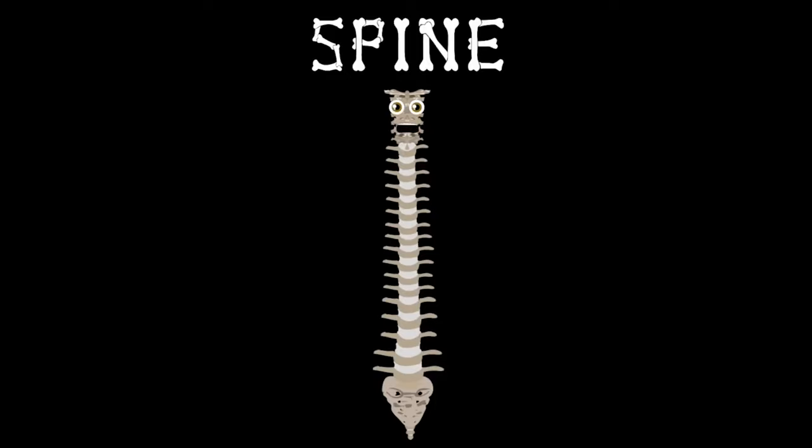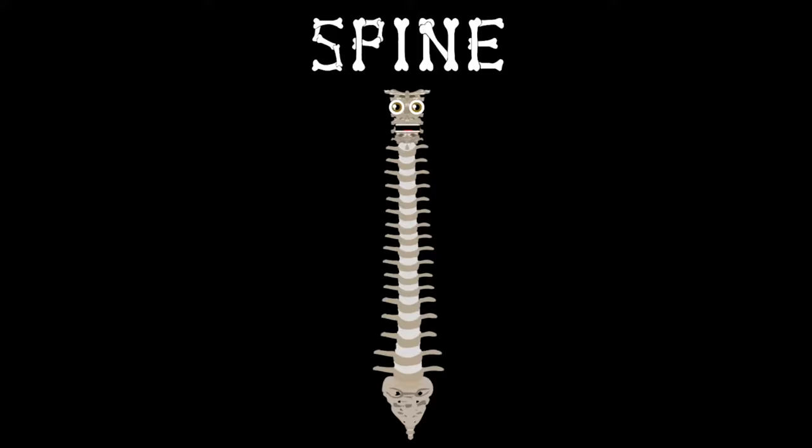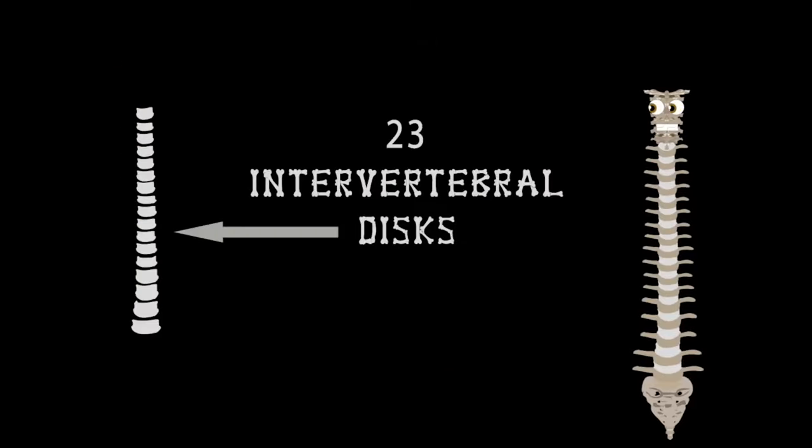There are 23 discs in the human spine. The intervertebral discs is their name you will find. These discs help you flex the hard vertebrae bone between most of your vertebrae.